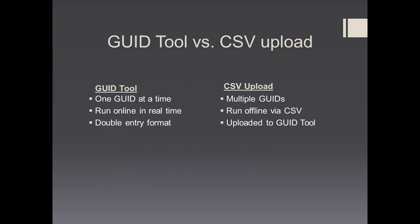There are two methods for creating a GUID. The first method is using the GUID tool, which creates one GUID at a time, runs online in real time, and uses the double entry format. The second method is using a CSV upload, which creates multiple GUIDs, is run offline via CSV or comma-separated value file, and is uploaded to the GUID tool.